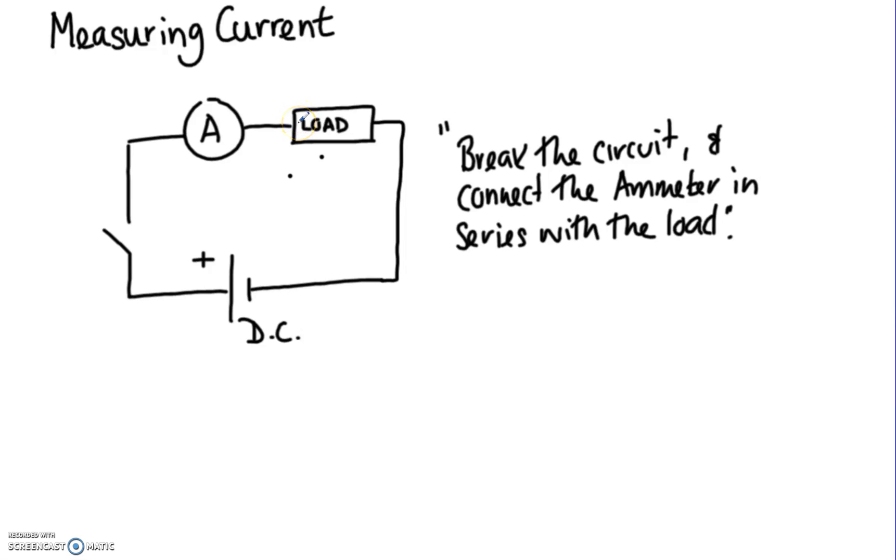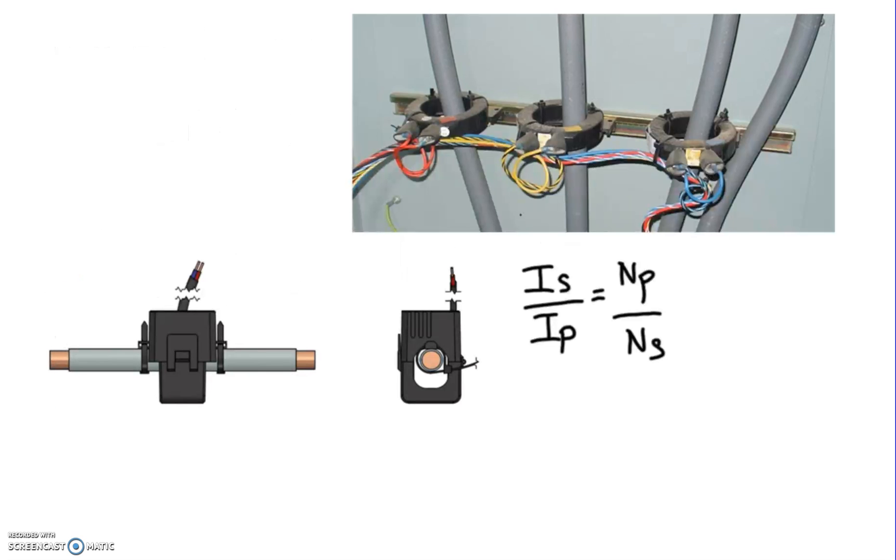That's fine for a very small DC circuit, but when we come onto mains, it's impracticable and a little dangerous. So what we use on main circuits, on AC circuits, is we use what we call CTs or current transformers.